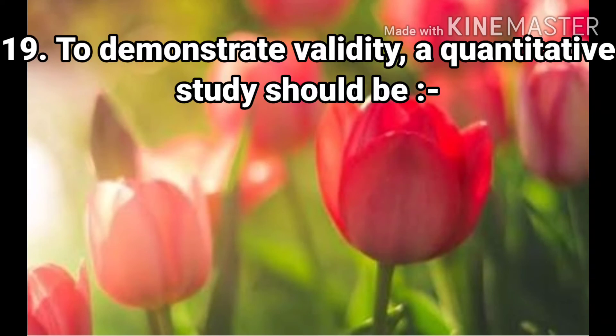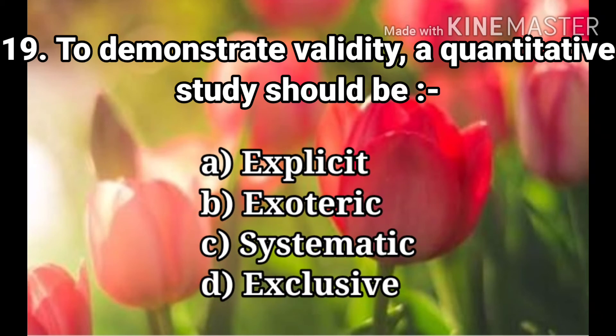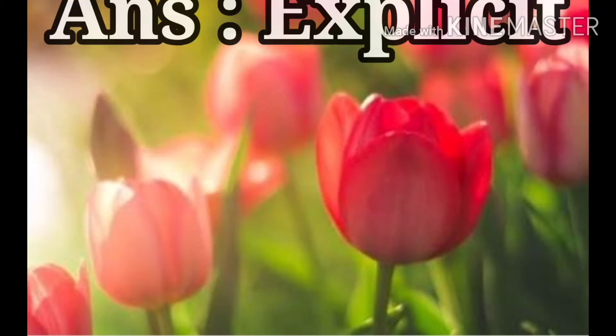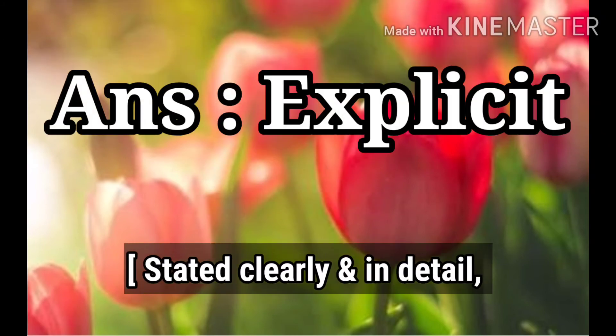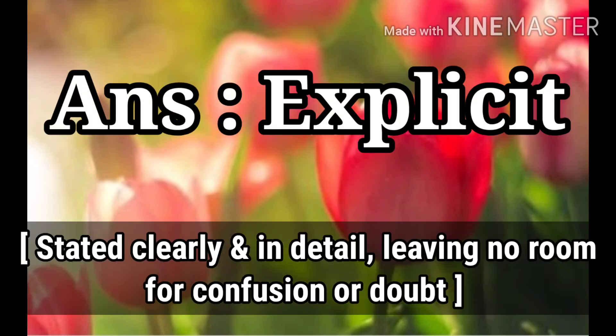Question 19: To demonstrate validity, a quantitative study should be. The options are Explicit, Exoteric, Systematic, and Exclusive. Explicit means stated clearly and in detail, leaving no room for confusion or doubt.